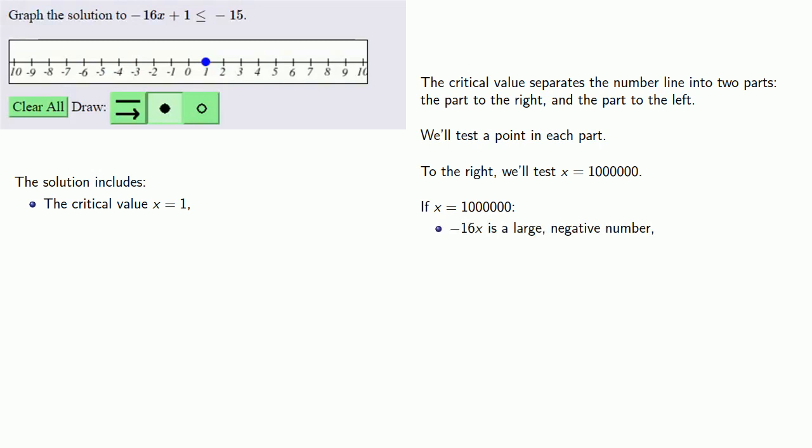If x equals 1 million, minus 16x is a large negative number. If we add 1, it's still a large negative number. Negative 16x plus 1 is less than or equal to negative 15, so the inequality is satisfied. We want to include the region to the right of the critical value.